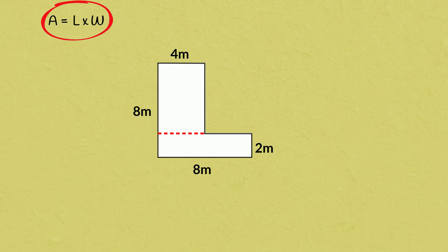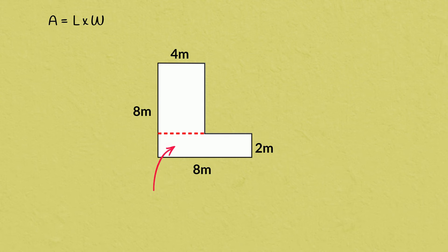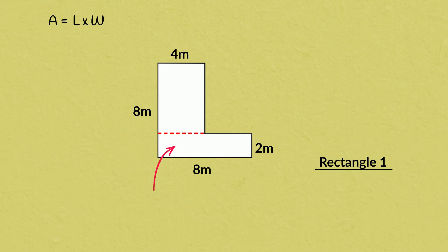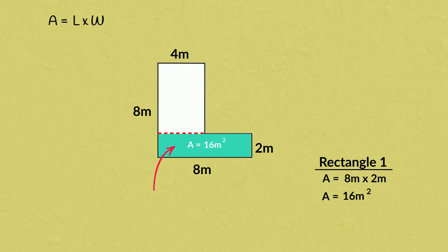The only thing we need now is to work out the length and width of each rectangle. Let's have a closer look, starting with this one. We can see that the width is 2 meters and the length is 8 meters. Applying the formula: 8 meters times 2 meters equals 16 meters squared. The area of this part of our compound shape is 16 meters squared.